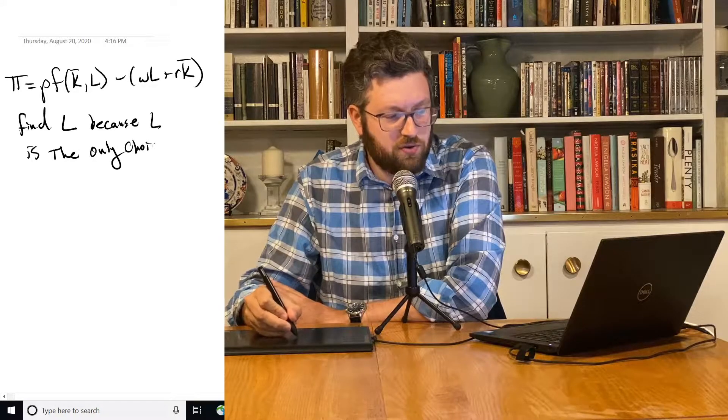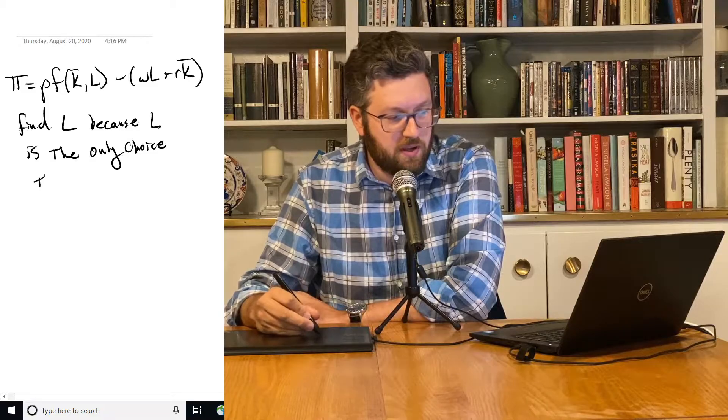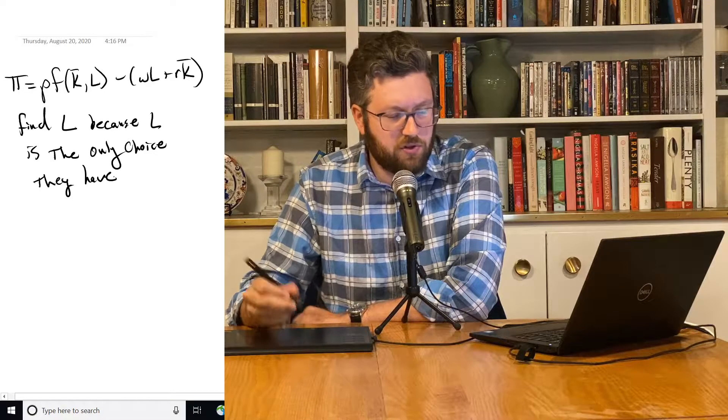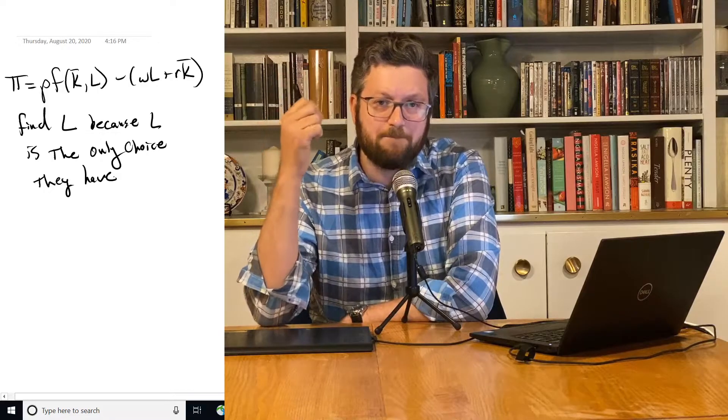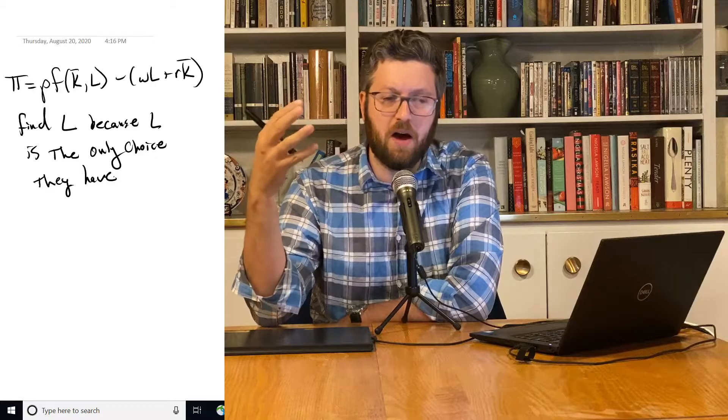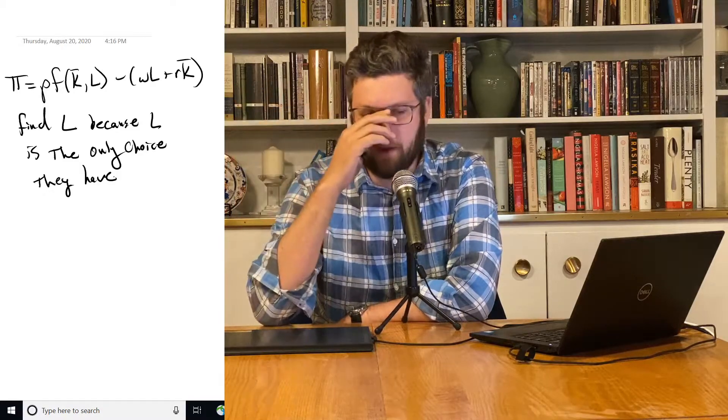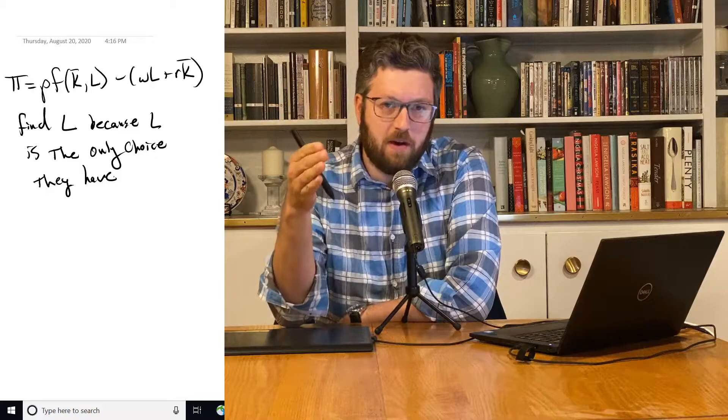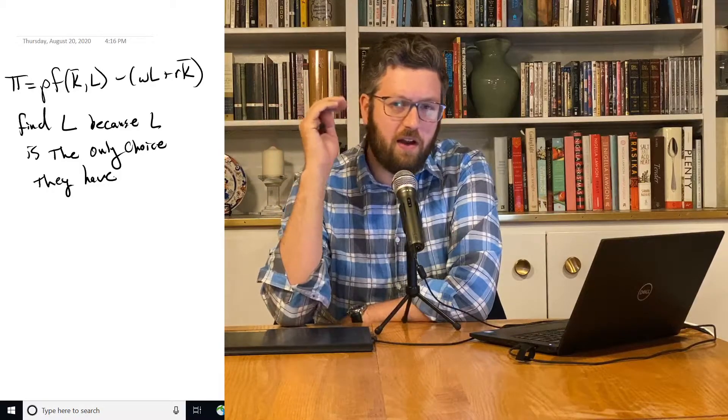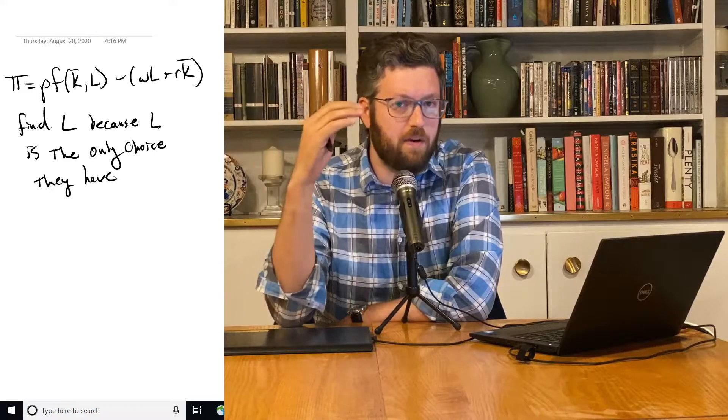Right, they have to choose how much, what quantity to make. They have to choose how much profit to get. But it's all dependent on their choice of labor, at least in this model where we don't have any weird complications. So if they find the amount of labor and we know they're going to use the production function, then we can figure out from that how much output and from that how much profit they make.